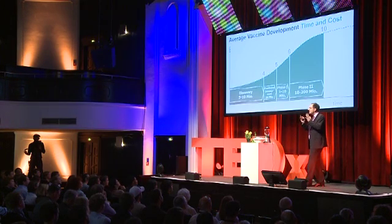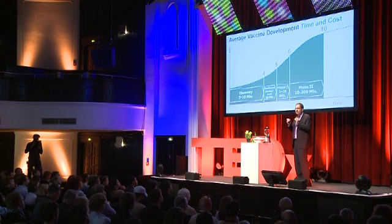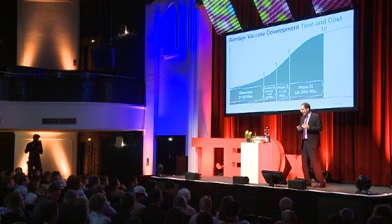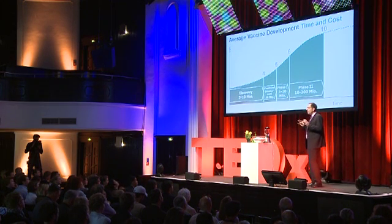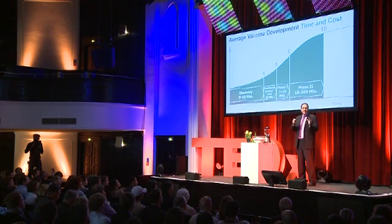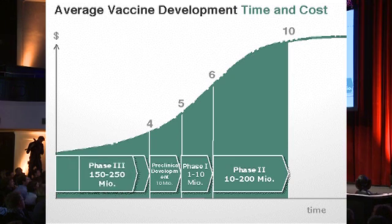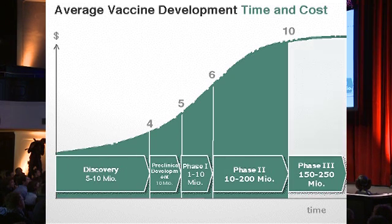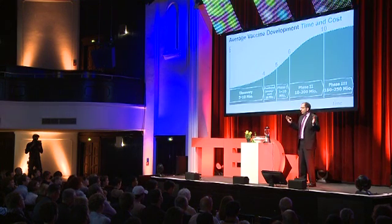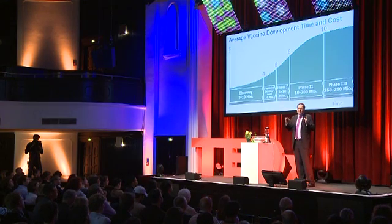In that next phase, we look in a pivotal trial at whether the molecule or vaccine is actually efficacious — does it actually protect the person from the disease we want to prevent? And that can be very, very lengthy and very, very expensive. $200 million is not out of the question in most cases. Once that works, you go to a broader trial called a phase 3 trial, with many clinical centers and even more dollars spent.